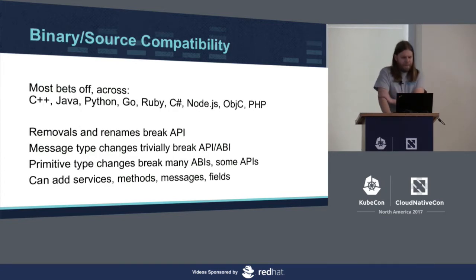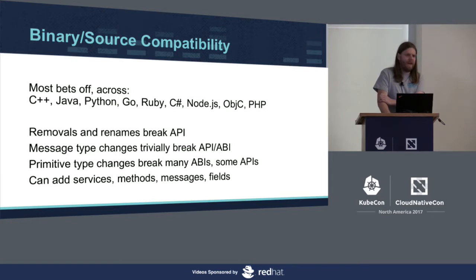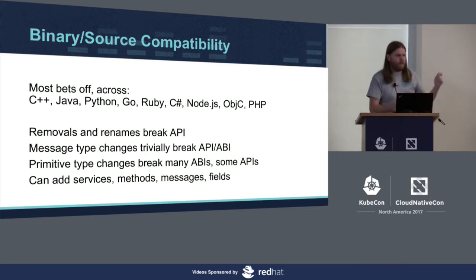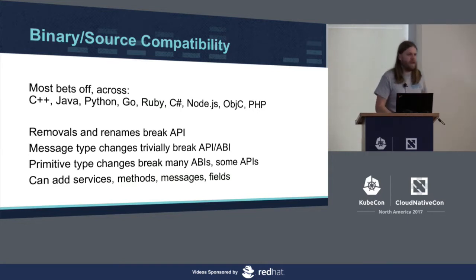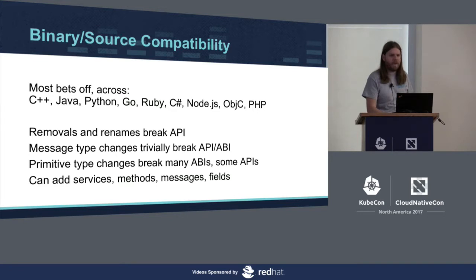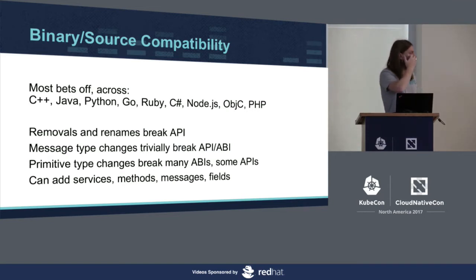Taking binary and source together: protobuf and gRPC support quite a few languages, so all bets are off if you try something fancy. Renaming or removing something will break someone. Changing a method type name will change method signatures and break statically compiled languages — though maybe not Python. Primitive type changes like int32 to int64 will cause problems in many languages due to implicit casts. That basically leaves us with adding services, methods, messages, and fields. You can add stuff — that is the limitation.